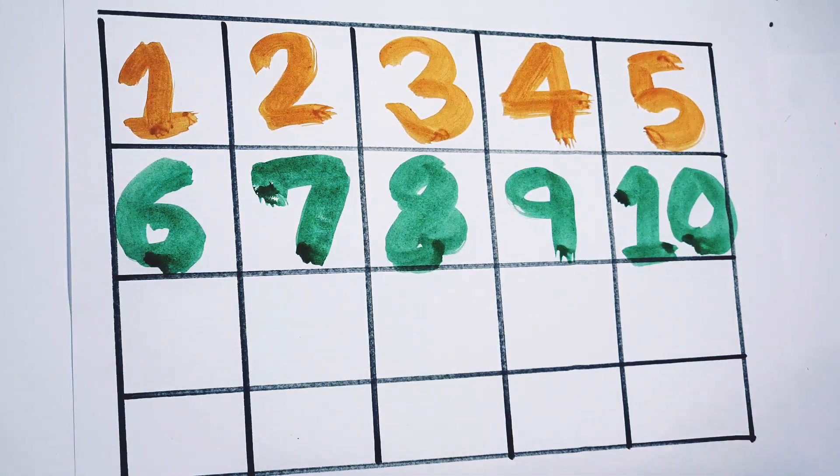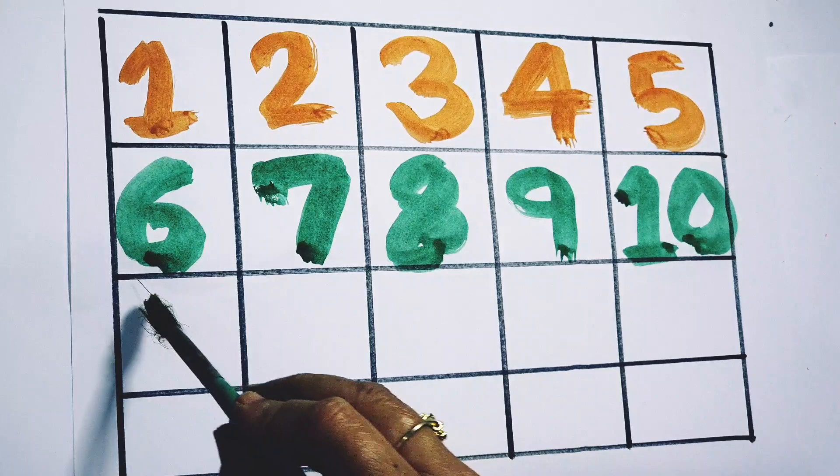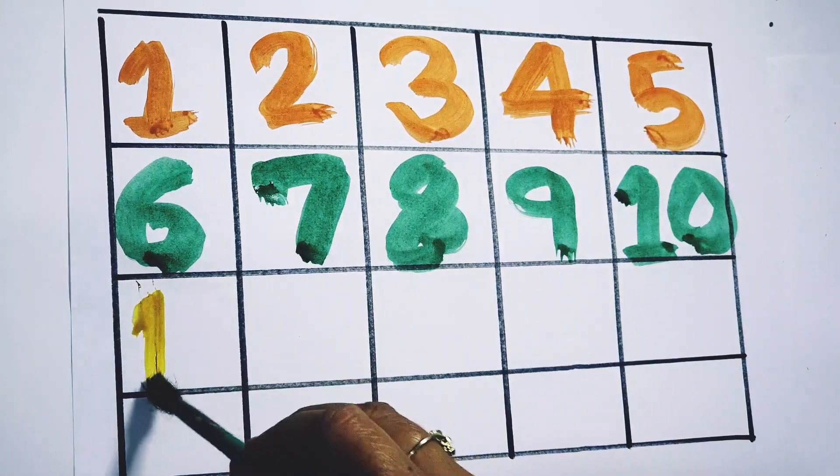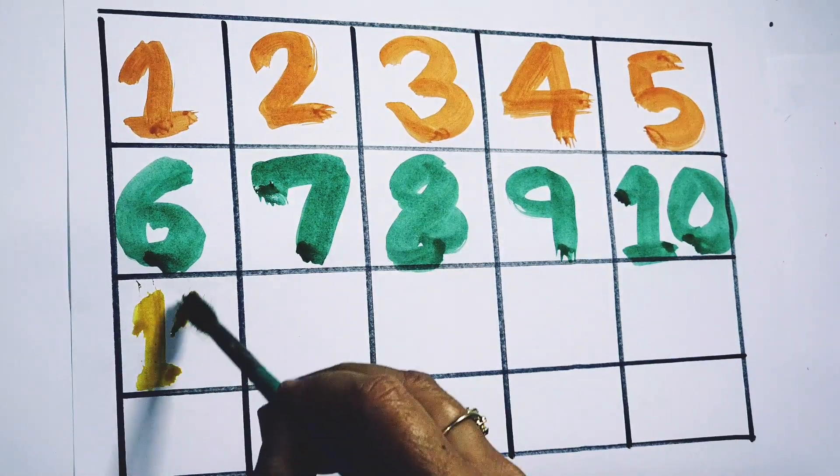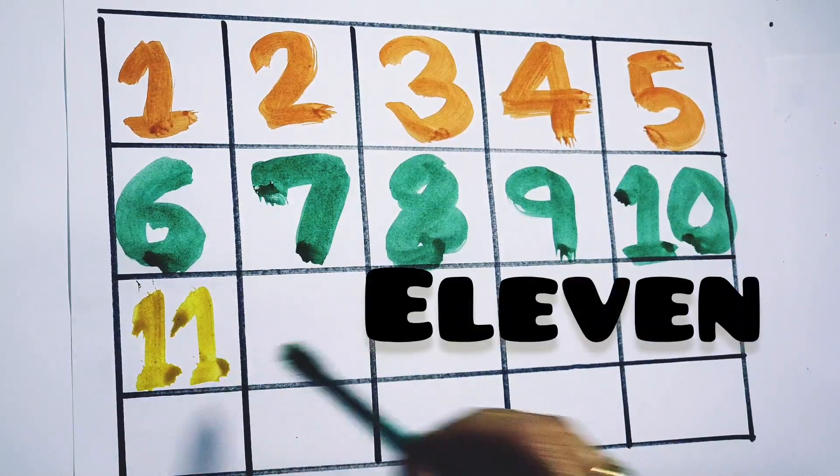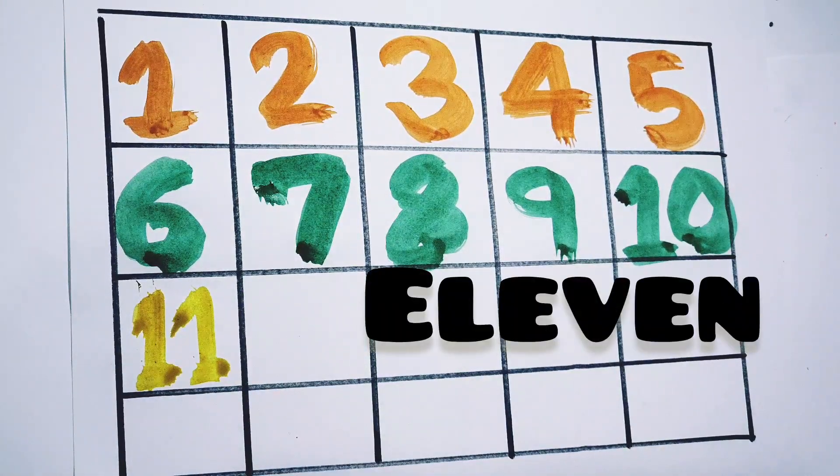Here, look a lot. 11 — E, L, V, E, N — 11.